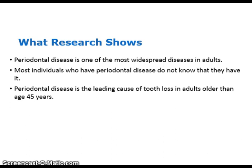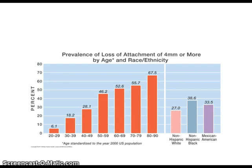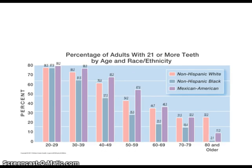Most individuals who have periodontal disease do not know that they have it. Periodontal disease is the leading cause of tooth loss in adults older than 45 years. This diagram shows the prevalence of loss of attachment of 4 mm or more by age and race and ethnicity. Another diagram of tooth loss in adults shows that by age 60 to 69, less than half of all adults in the United States have retained 21 or more teeth.